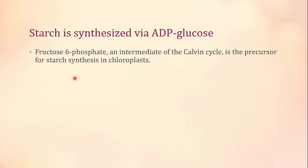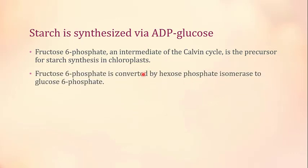Now we discuss the major pathway. Fructose-6-phosphate, an intermediate of the Calvin cycle, is the precursor for starch synthesis in the chloroplast. These triose phosphates come from photosynthesis. Fructose-6-phosphate is converted by hexose phosphate isomerase to glucose-6-phosphate. This is an isomerization — fructose-6-phosphate is changed into its related molecule, glucose-6-phosphate.